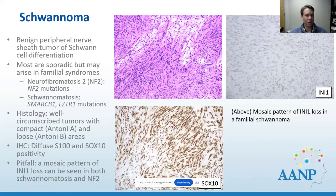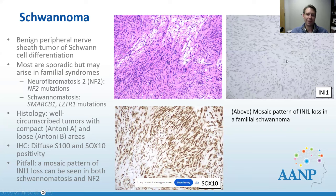We're very familiar with schwannoma in neuropathology with loose and compact areas, and these can happen in the sinonasal tract. In familial cases, since we've been talking about SMARCB1, we can have a mosaic pattern of INI1 loss in familial schwannomatosis from SMARCB1 or neurofibromatosis 2 from NF2 — a pitfall we might encounter.